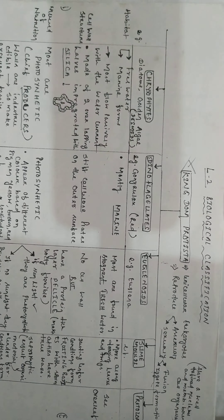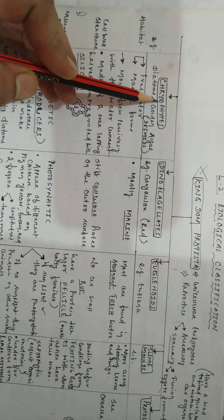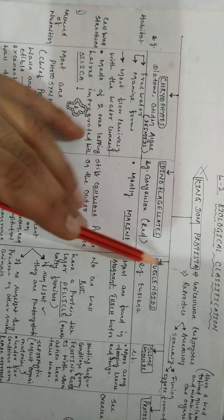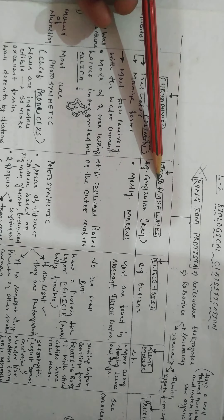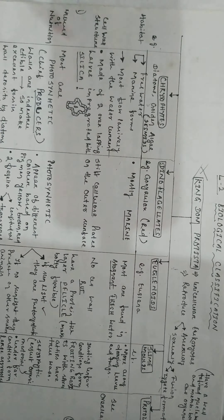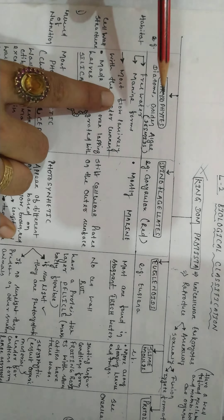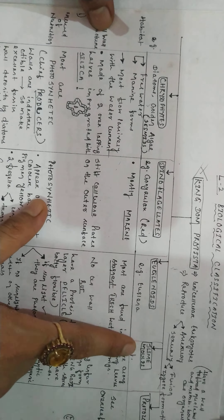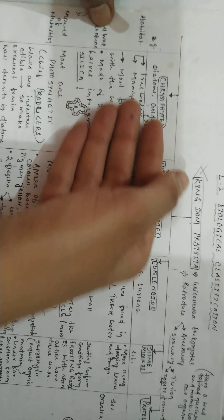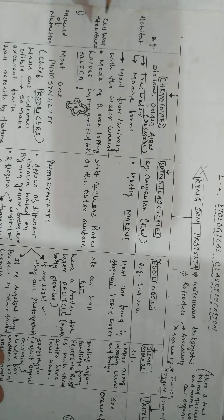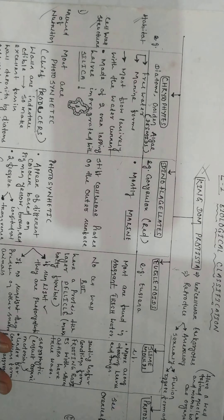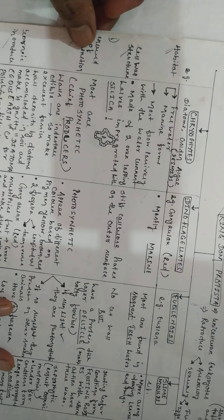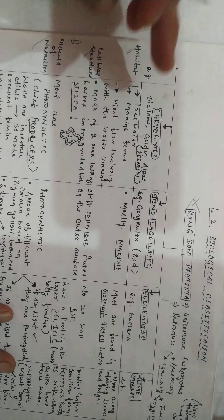Kingdom Protista is classified into five groups: chrysophytes, dinoflagellates, euglenoids, slime molds, and protozoans. These groups are characterized and differentiated based on their habitats, cell wall structure, mode of nutrition, and economic importance.